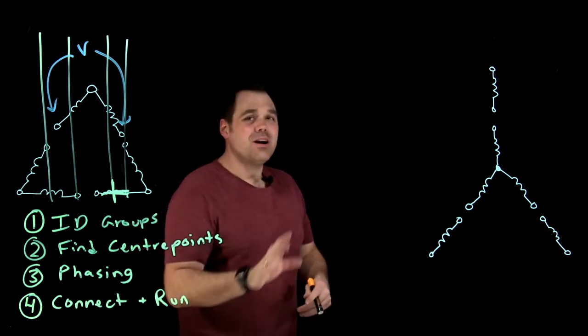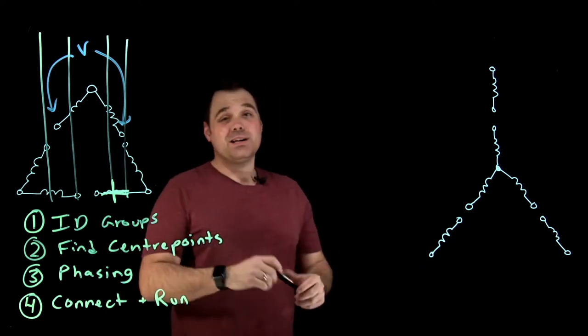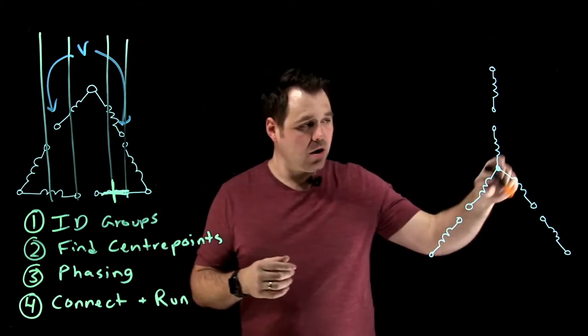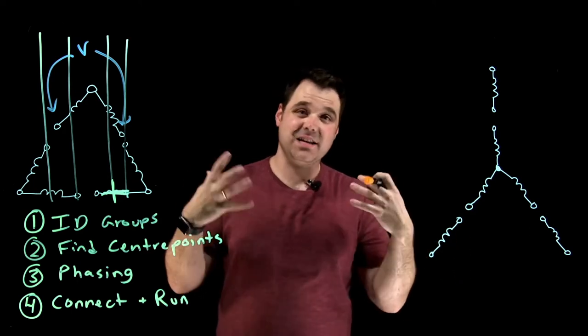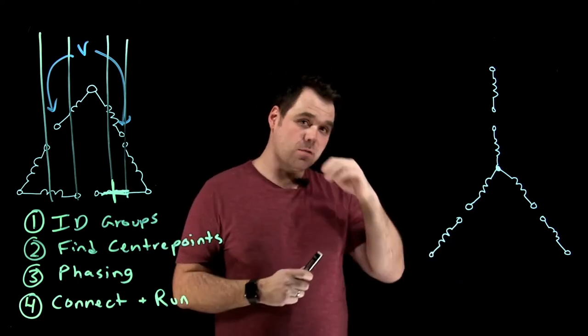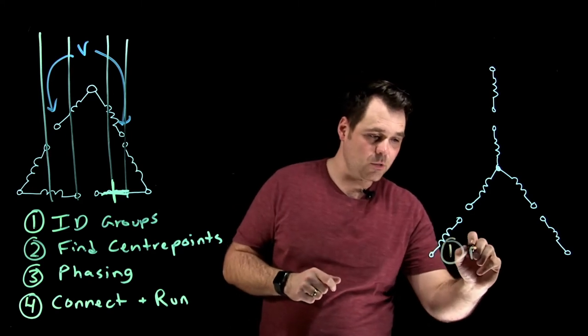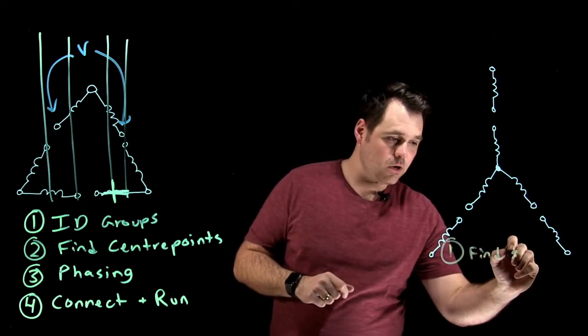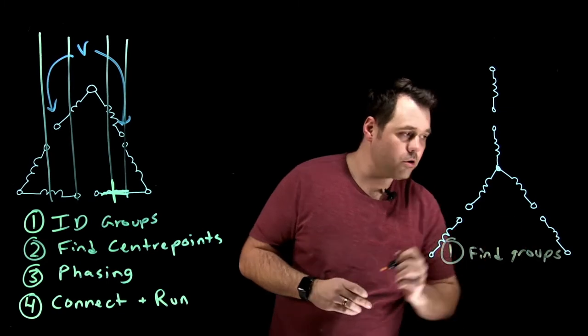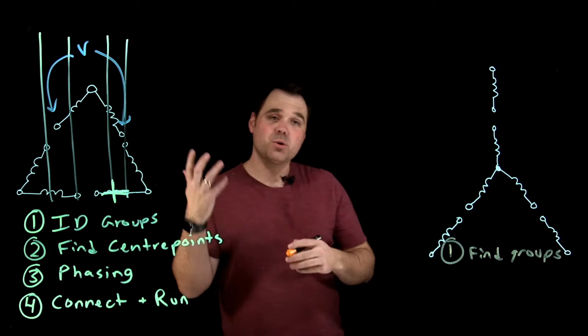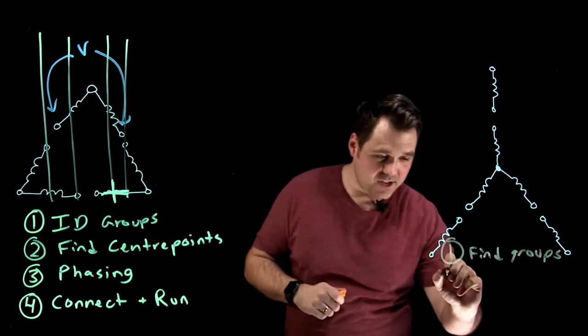Now let's take a look over here at the Y motor. Now the Y is a little bit more common. What we have here is we have our one Y connection and then we have our second set of three windings that we need to confirm. So again, the first step is actually the same. We're going to find our groups. Step number one, easy peasy.